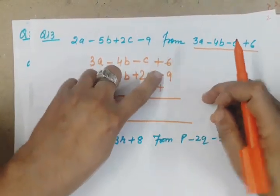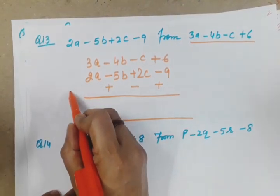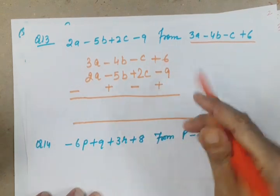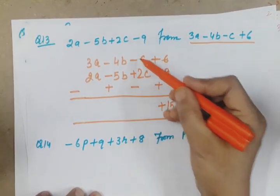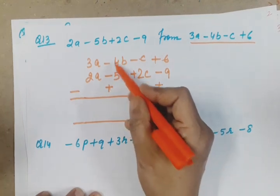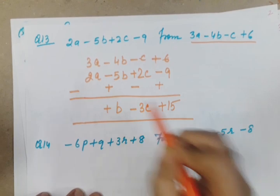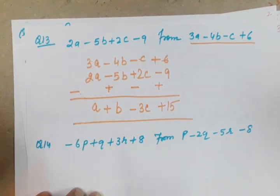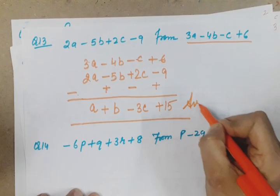This plus hai, its opposite will be minus. This minus hai, opposite is plus. Here no sign means positive, so it becomes negative. These signs changed means now these are silent and these are active. The active symbol we will use: +6 +9, +15. -c -2c, minus minus plus, 2 and 1 is 3c with minus sign. +5b -4b, plus minus minus, bigger value is 5 and 5 ka symbol is plus, so +b. 3a -2a is +a. So a +b -3c +15, this is your answer.